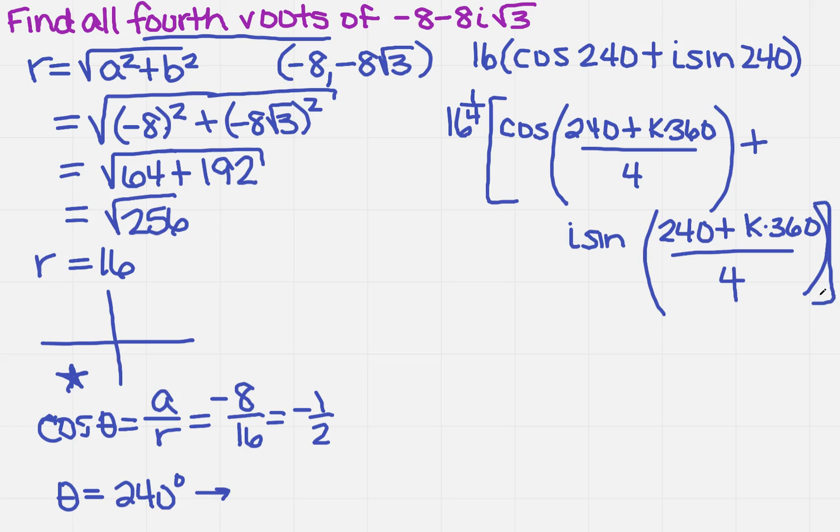Well, now, once I've done that, it simplifies to something really pretty. It becomes 2 times the cosine of 60 plus k times 90 plus i sine of the same thing, 60 plus k times 90. So far, so good.